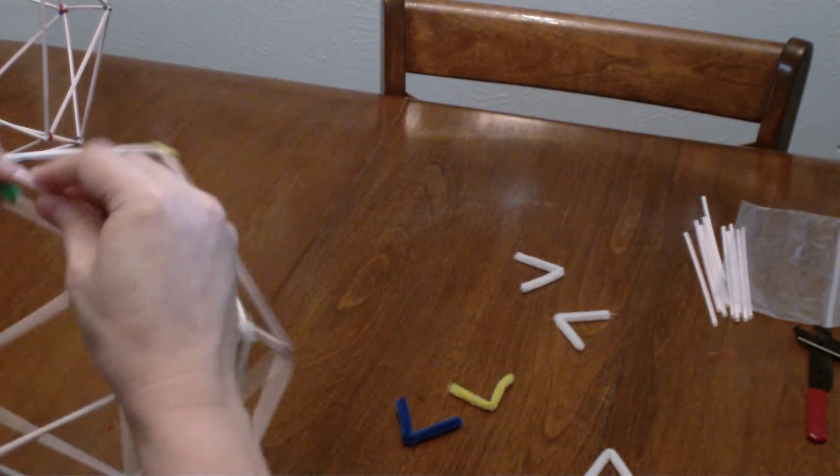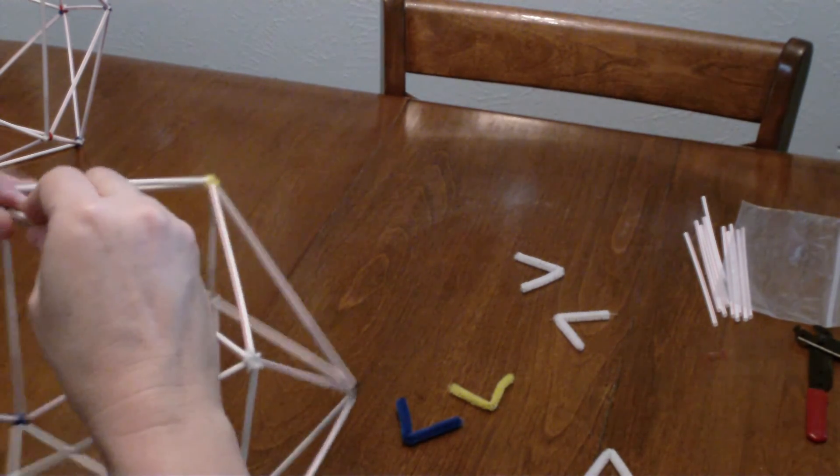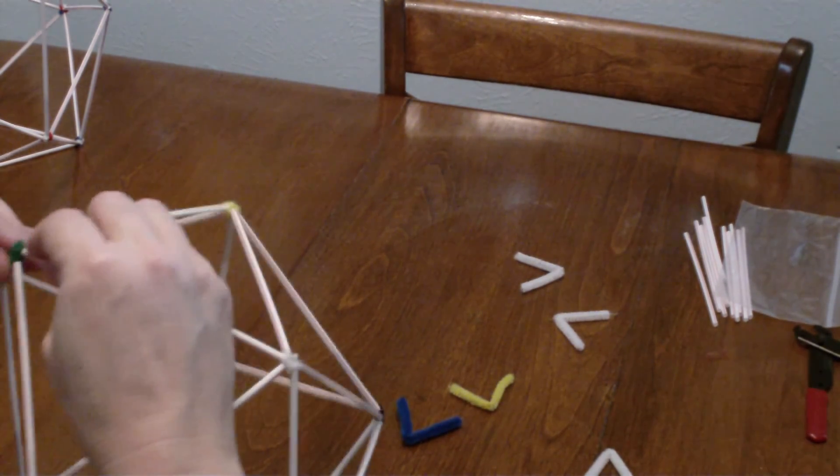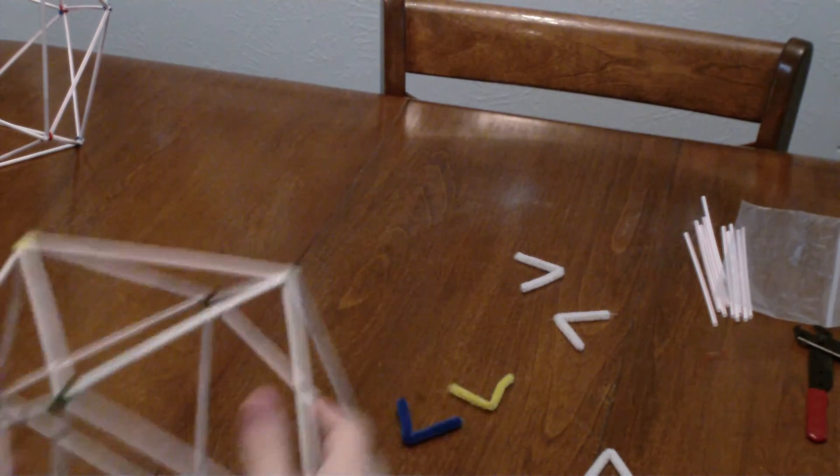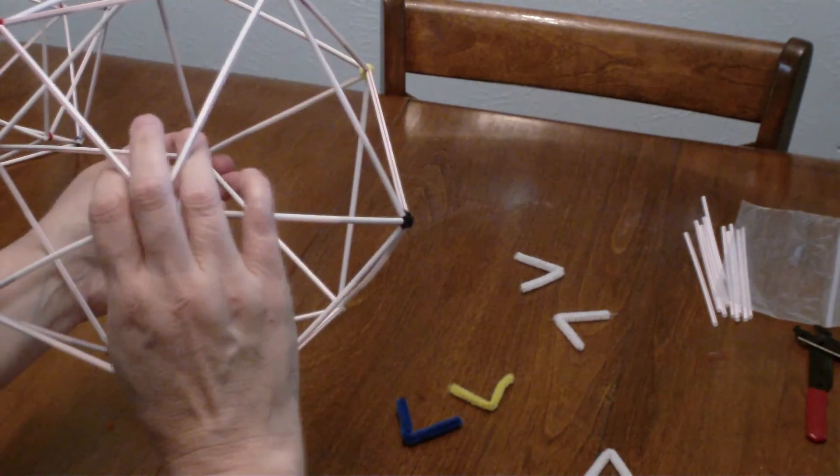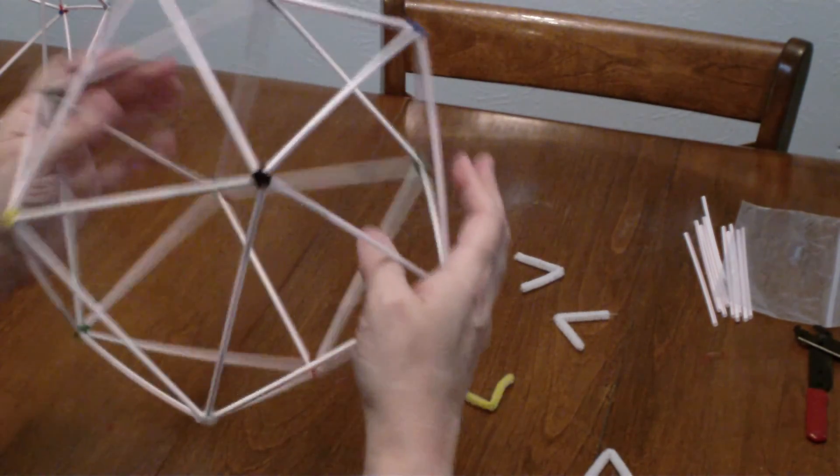And then last one. And so what we have now is 20 equilateral triangles. And so we have our icosahedron.